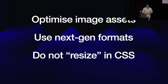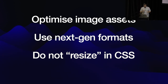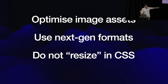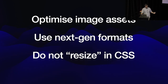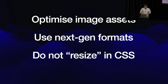What can you do to optimize your images? Use next-generation image formats: AVIF, WebP, JPEG XL, JPEG 2000 — anything that's not a standard JPEG or PNG. Also, do not resize images using CSS. There are websites that request an image that is 2000 by 1500 pixels and then shrink it in CSS to 200 by 150. I've seen carousels where each image is 2 megabytes because they load the large image and shrink it in CSS.